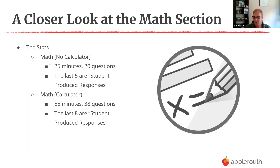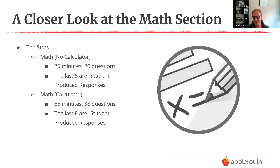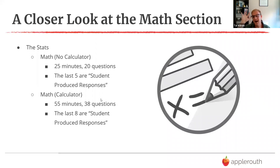The last section — section four with the calculator — some people have time issues on no-calc but most don't on the calculator section, though it's a grueling long section to end with. On the calculator section you'll find you don't really need it as much, versus no-calc where you wish you had it. Formulas are given at the beginning of each section — special right triangles and geometry formulas. Very different from ACT where math is section two, 60 questions in 60 minutes with the calculator the whole time, no grid-ins, but five multiple choice options versus SAT's four.